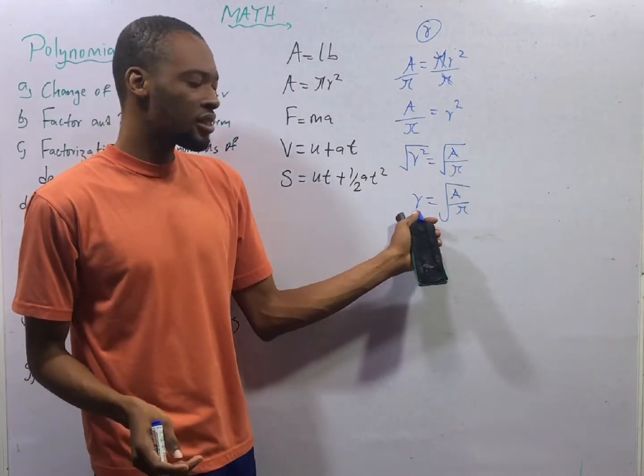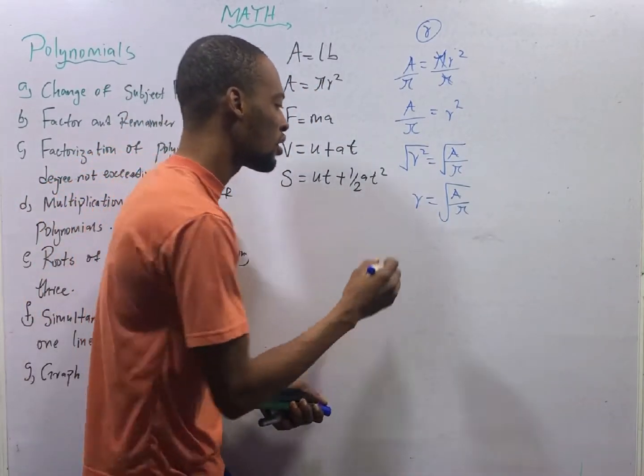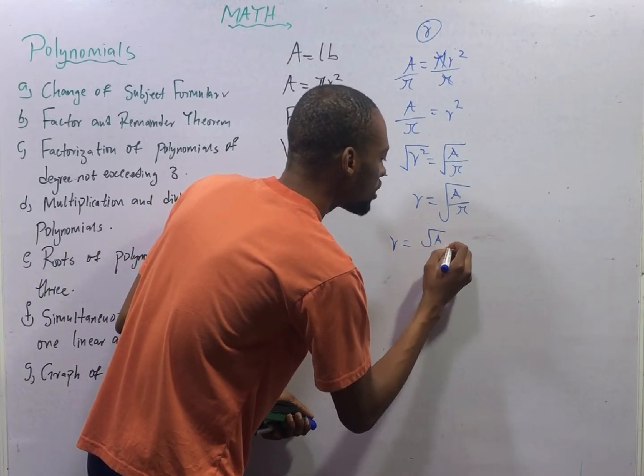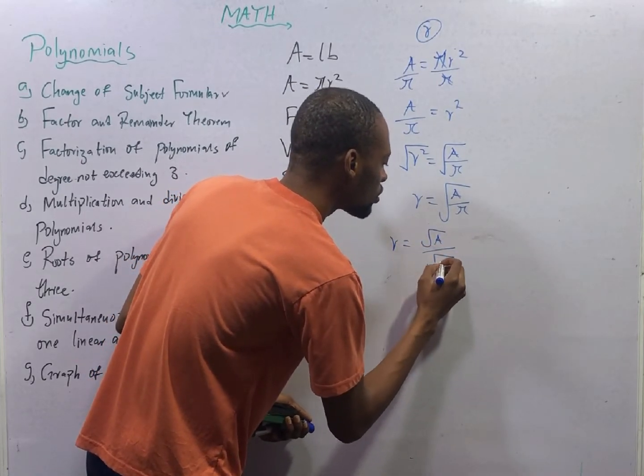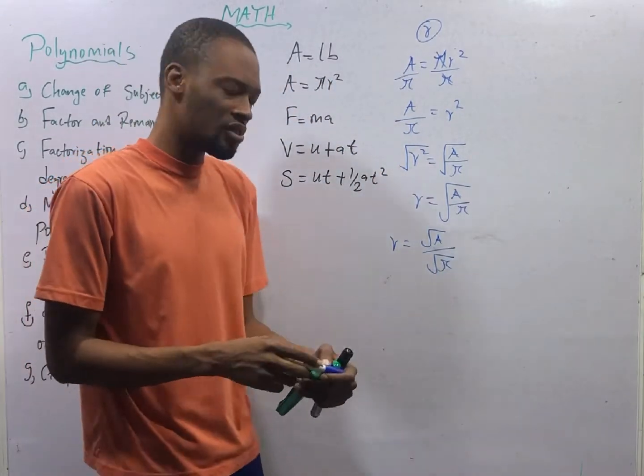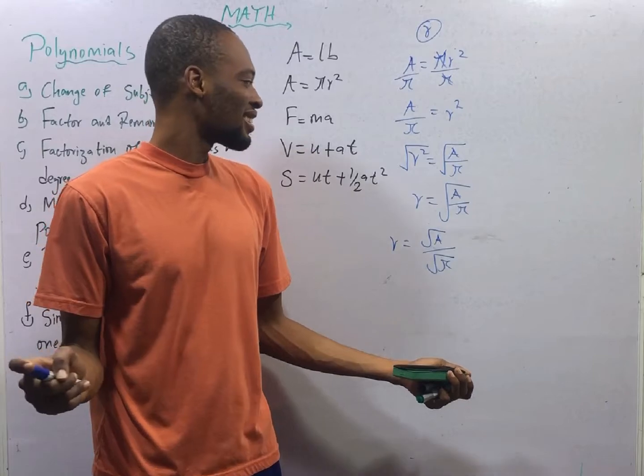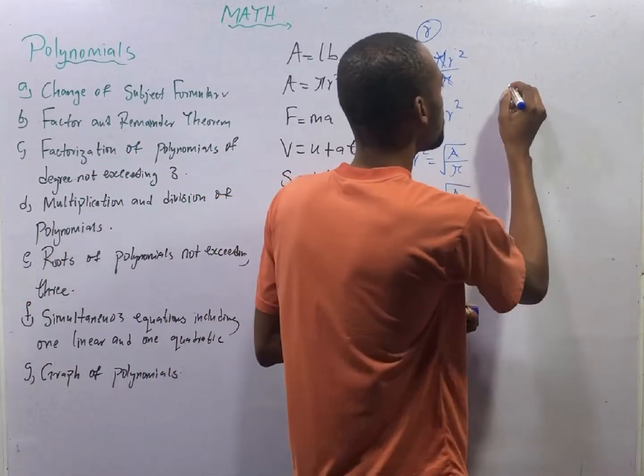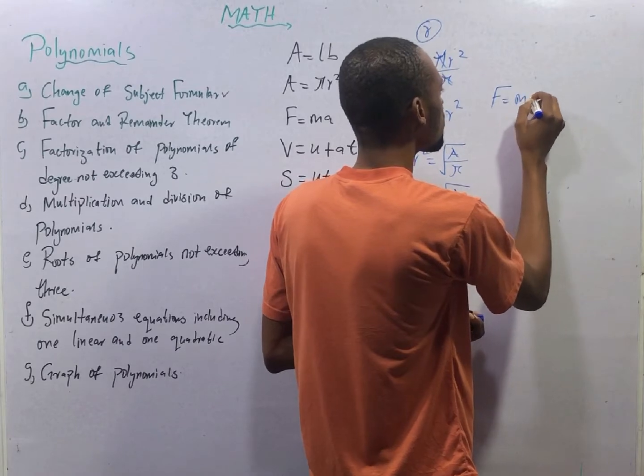You can choose to leave this like this, or you do something like this. From the law of surds, this is root A all over root π. They are the same. Now, let's see the next one.